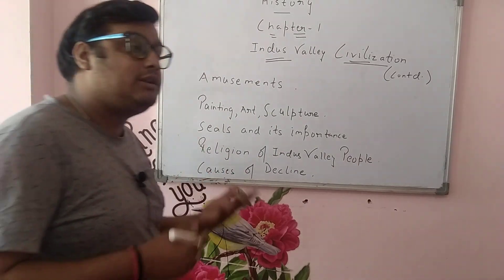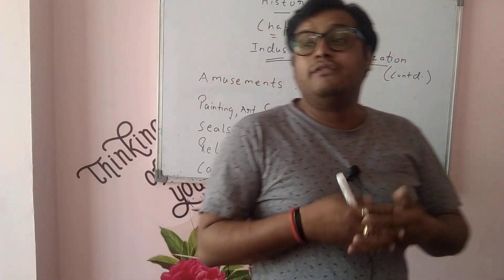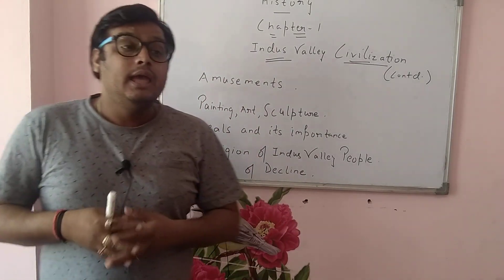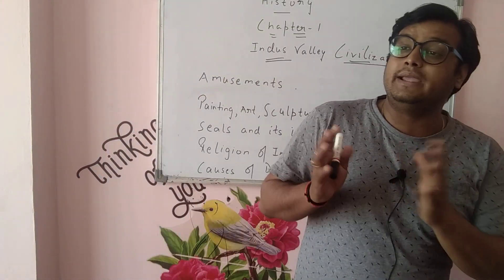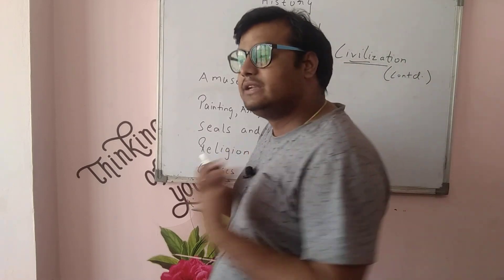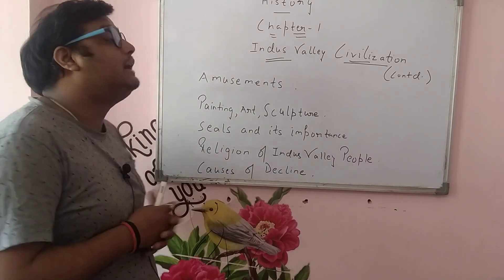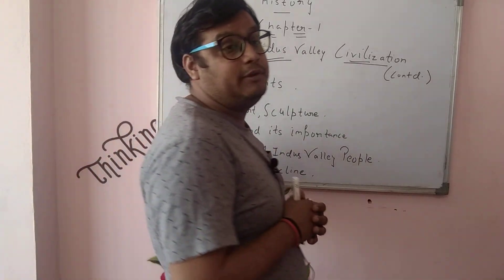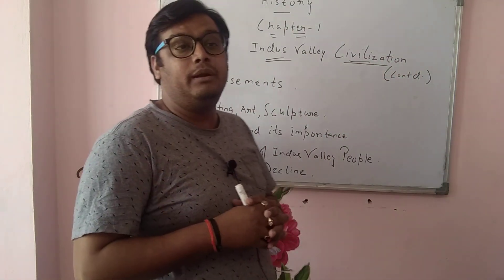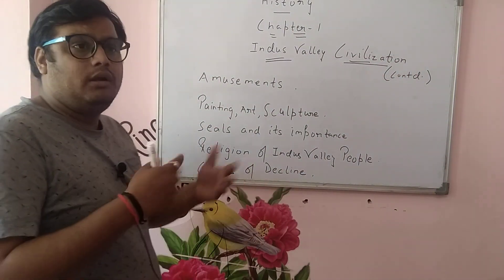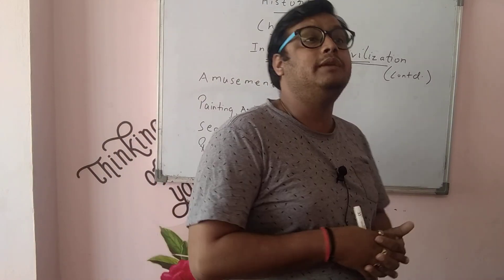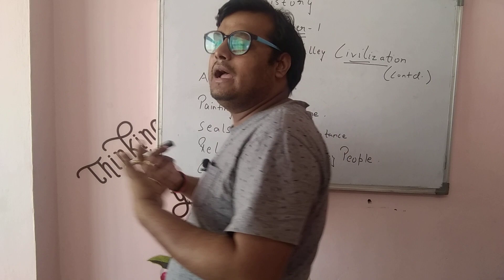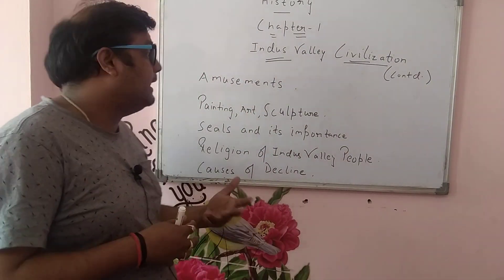The second reason is that there must have been some natural disaster such as earthquake, floods, or volcanic eruption that led to the decline of the Indus Valley Civilization. Third, they used to have burnt bricks for making their houses and must have cut down trees in an indiscriminate manner on a large scale, changing the ecological balance and drying up water sources. Another reason is that the Indus Valley people may have died due to an epidemic that spread among the population.